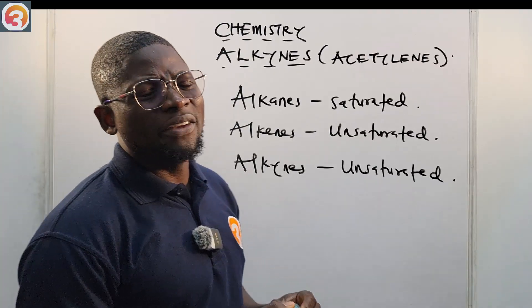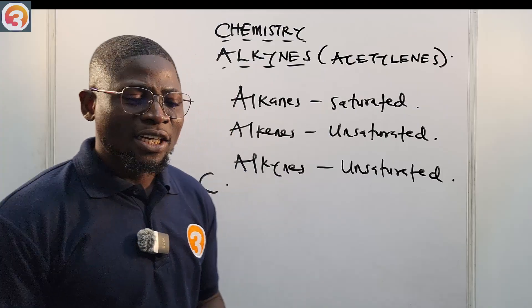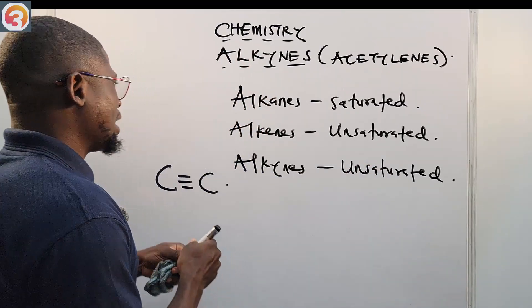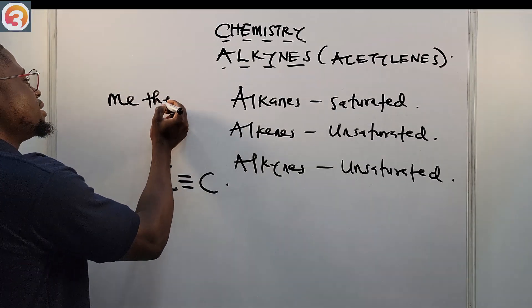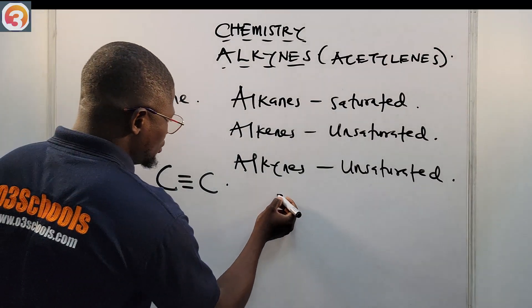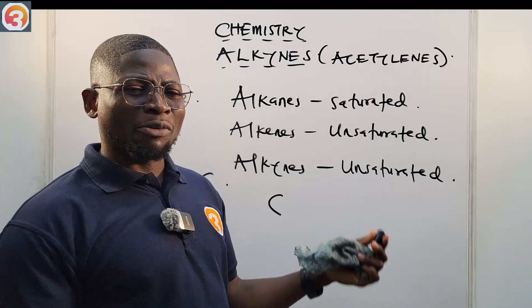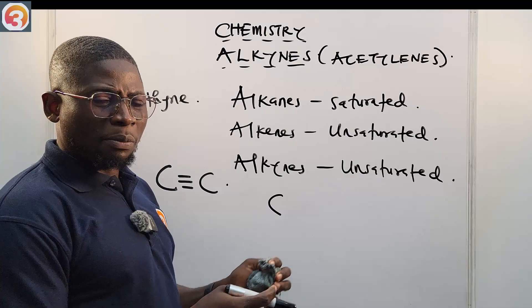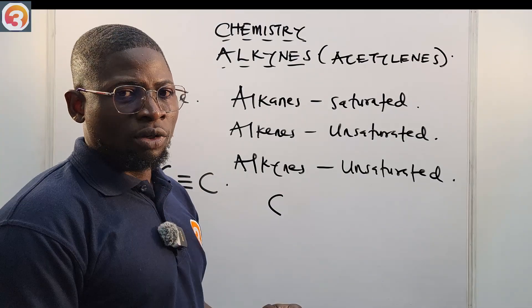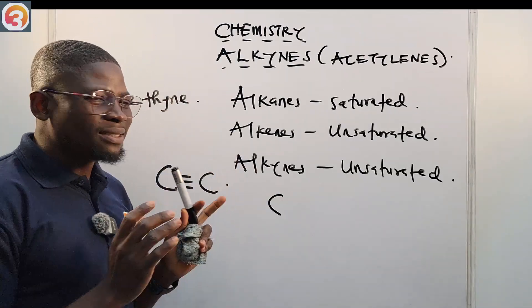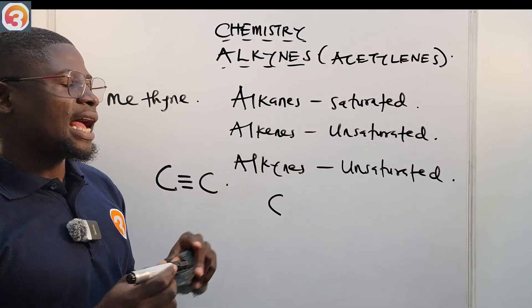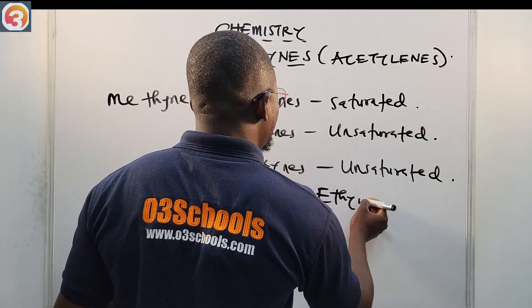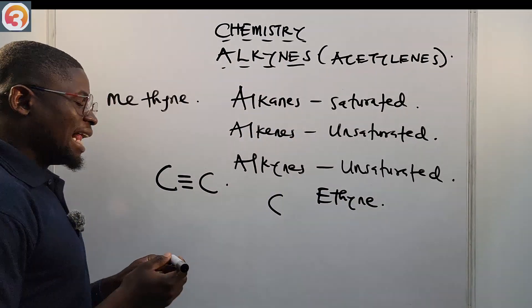It is important to know the first member of the alkyne family. We cannot have methyne — that would have just one carbon atom, and for a triple bond to be present we need at least two carbons. That is why the simplest member of the alkyne family is ethyne. Ethyne has two carbon atoms.